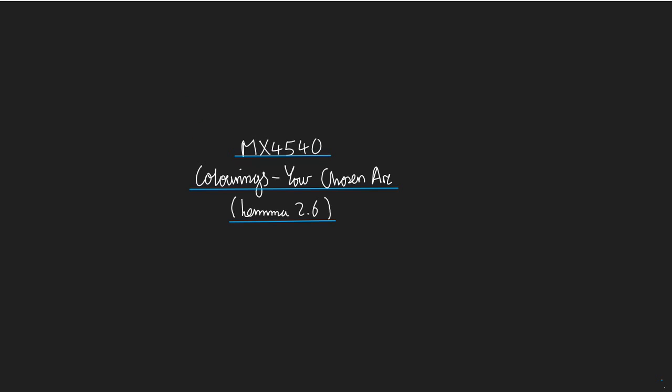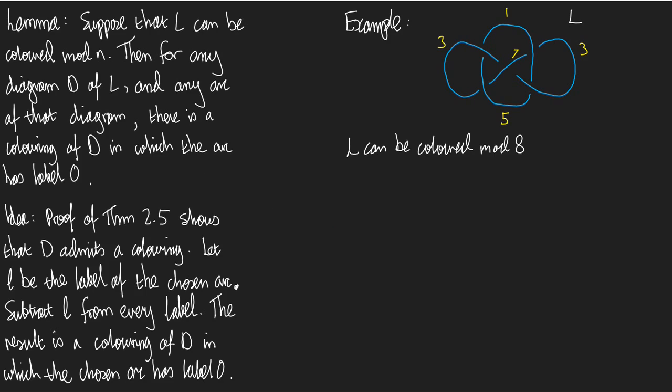Here is the statement. It's the statement of lemma 2.6. Lemma. Suppose that L, some link, can be coloured mod n.